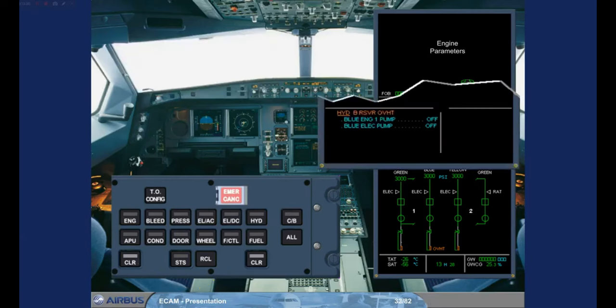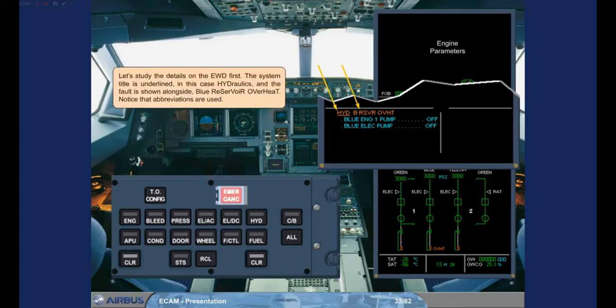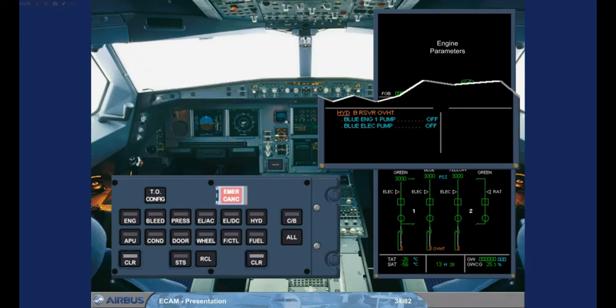Let's study the details on the Engine Warning Display first. The system title is underlined — in this case, Hydraulics — and the fault is shown alongside: Blue Reservoir Overheat. Notice that abbreviations are used. If you look carefully at the hydraulic system display, you will notice an amber overheat message is displayed. This abnormal indication is how the fault is shown on the system synoptic.